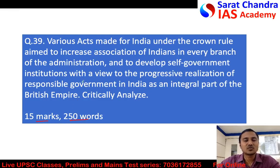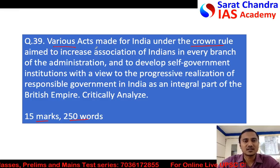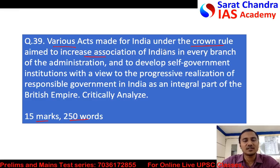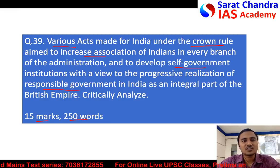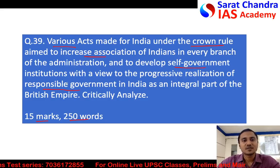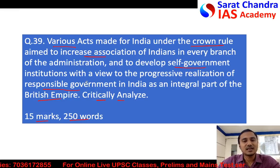This question is for 15 marks and 250 words. Observe the question carefully: after crown rule started in India from 1858, various acts were made till independence in 1947. The aim of these acts was to increase the association of Indians in administration along with the British, to develop self-government institutions in India, and to achieve responsible government within the British Empire.